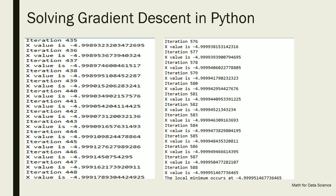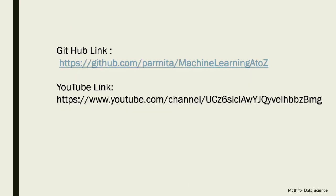In conclusion, gradient descent finds the minima of your cost function or loss function created after building your model. I've uploaded the full code to GitHub — the link is in the description. Any queries, questions, or feedback, please comment below. Keep liking and subscribing, and thanks a lot!